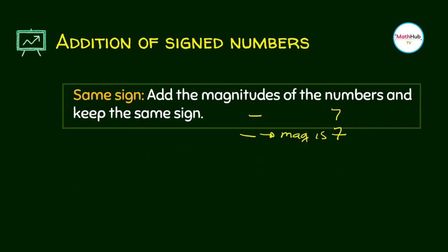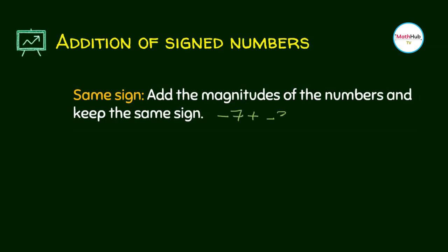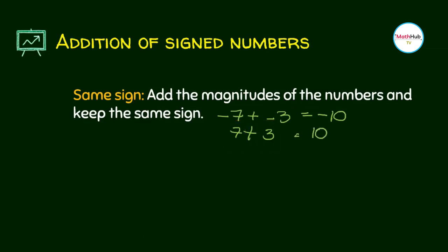If you have the same sign, you add the magnitude and copy the same sign. For instance, I have negative 7 plus negative 3. Since I have the same sign, I'll just look at the magnitude and ignore the sign. So 7 plus 3 is 10, and then copy the sign. If I have 7 plus 3, both of them are positive — if there's no sign, that automatically means it's positive. So again, 7 plus 3 is 10. Since they are positive, copy the common sign.